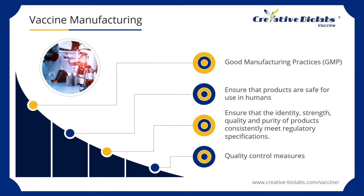The manufacture of vaccines is achieved from the propagation of living organisms. Some of these may be dangerous human pathogens. Therefore, the manufacture of vaccines is conducted in a highly regulated and controlled environment. All vaccine manufacturers are subject to national and international regulatory control and must comply with specifications for good manufacturing practices to ensure that products are safe for use in humans and ensure that the identity, strength, quality, and purity of products consistently meet regulatory specifications. Vaccine production needs to be carried out in a sterile environment and closely monitored by quality control measures.